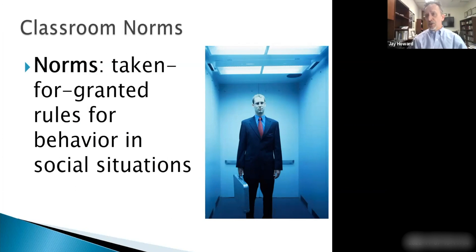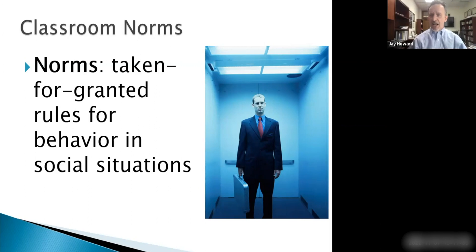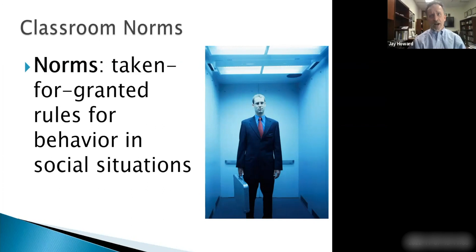I'm a sociologist by training and my whole approach to interaction in the classroom is grounded in sociology. One of the things you'll find in every introductory sociology textbook is the concept of social norms. Social norms are taken-for-granted assumptions — rules or guidelines about how you ought to behave in a social situation. A social situation is any context where there's another person present. Even something as simple as riding on an elevator has a long list of rules for how you ought to behave.